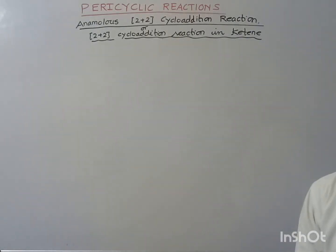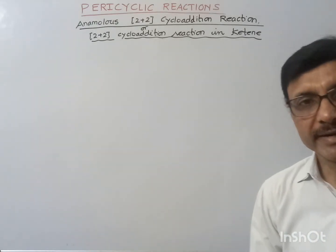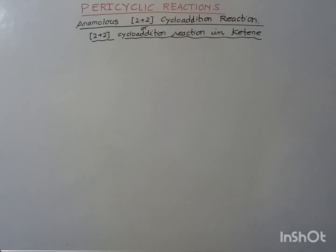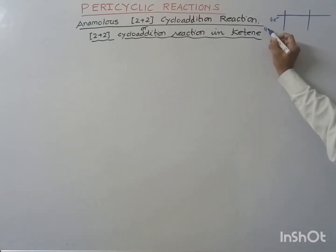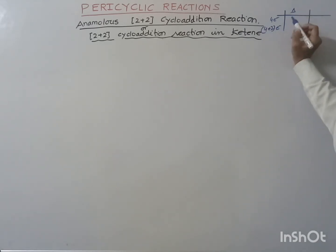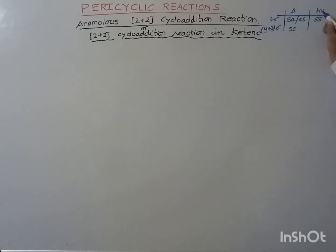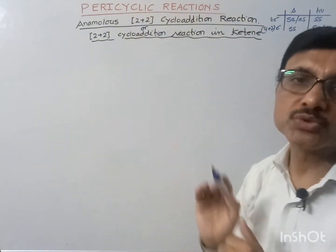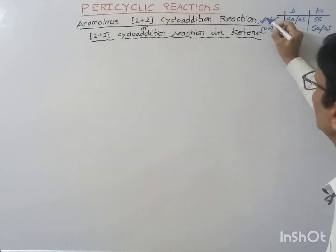Welcome to pericyclic reactions. Today I will explain anomalous 2+2 cycloaddition reaction, or 2+2 cycloaddition reaction in ketenes. According to the selection rule for cycloaddition reactions, for a 4-electron system (4n electron system) and for a 4+2 (4n+2) electron system, we have specific rules. We are discussing the 2+2 cycloaddition reaction, which is an example of a 4n electron system.